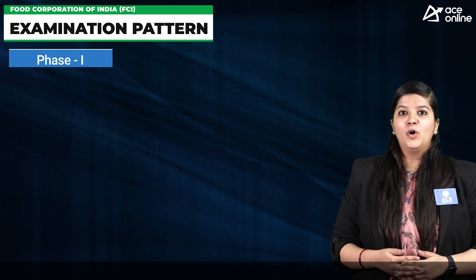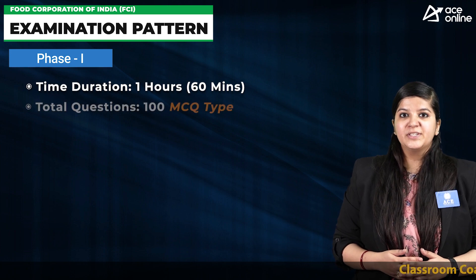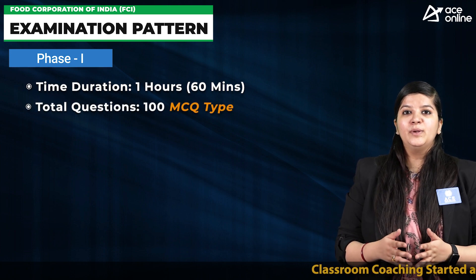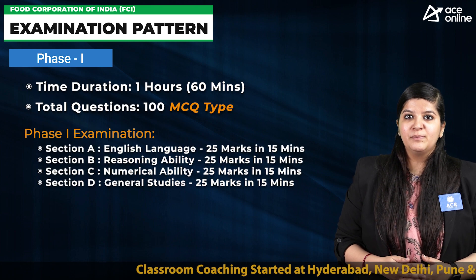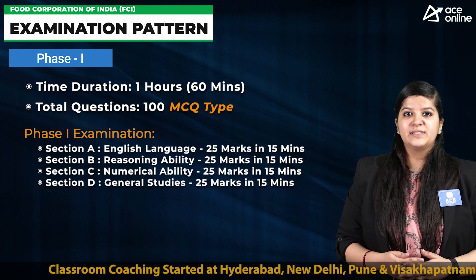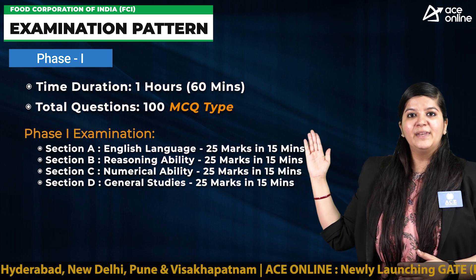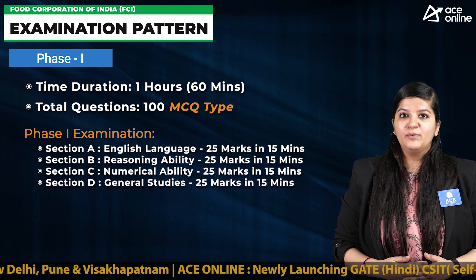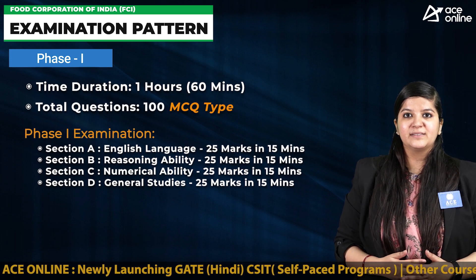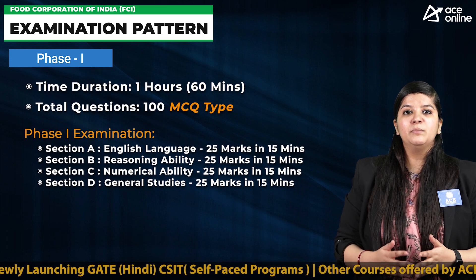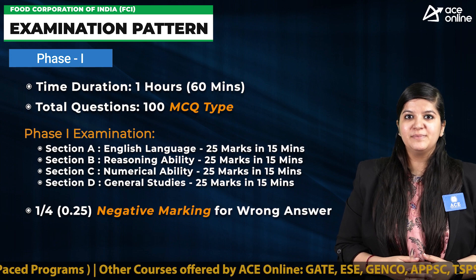For the online Phase 1 examination, total time duration will be 60 minutes, in which candidates need to attempt 100 questions of 100 marks. Questions will be asked from four different sections: General English, General Studies, Reasoning Ability, and Numerical Ability. 25 questions will be there from each section, comprising 25 marks each, with 15 minutes given per section. There will be negative marking of 0.25 for each wrong answer.